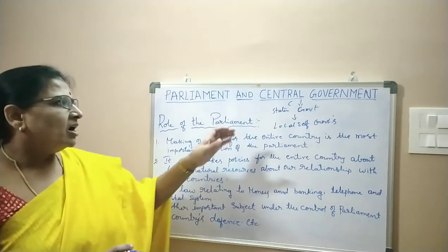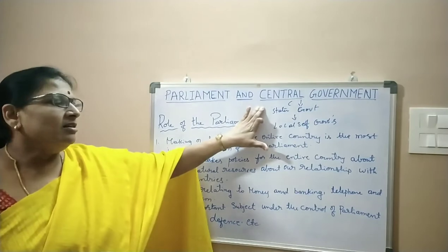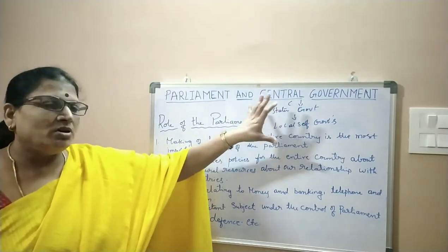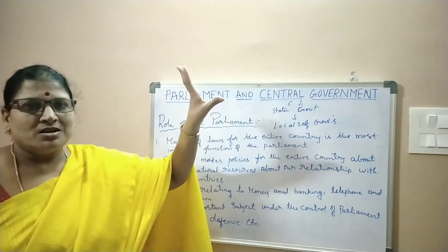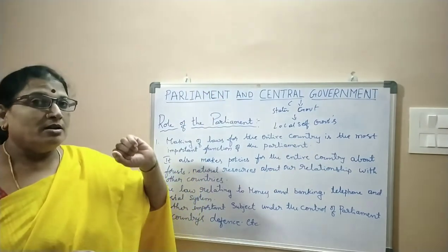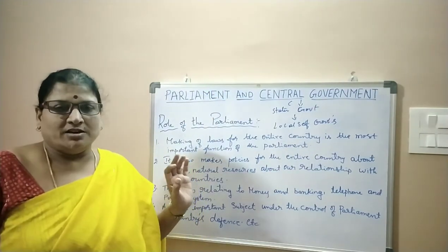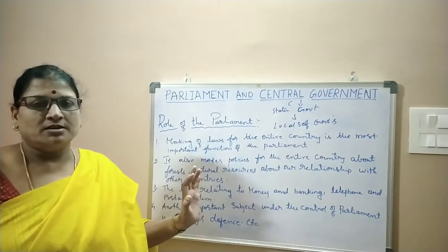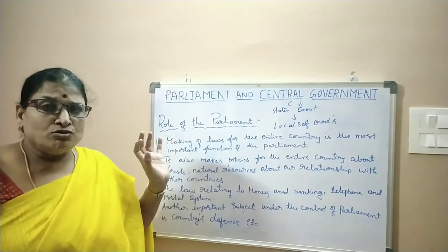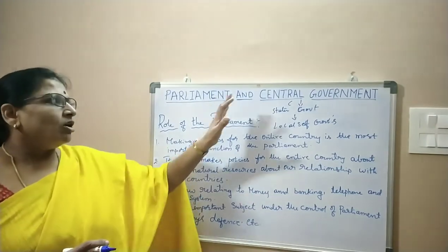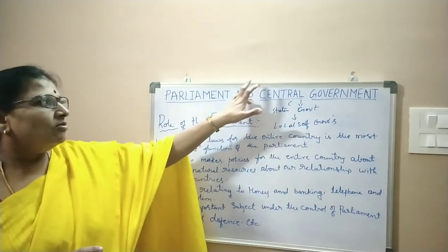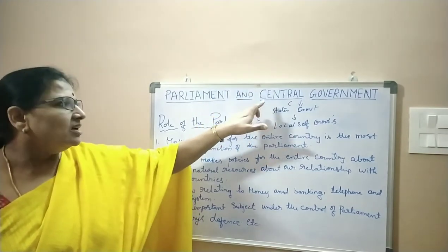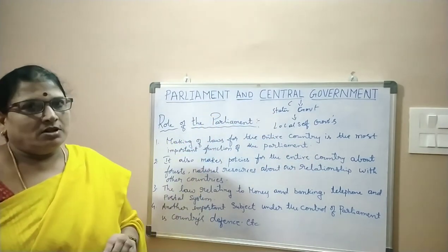That's why we have adopted this federal set-up. Opposite to federal set-up is unitary government, where only one government rules from the center, that is the central government. Because our country is a vast country, it is divided into different states, and we have a huge population, so we have adopted a federal set-up. Parliamentary form of government with a federal set-up.